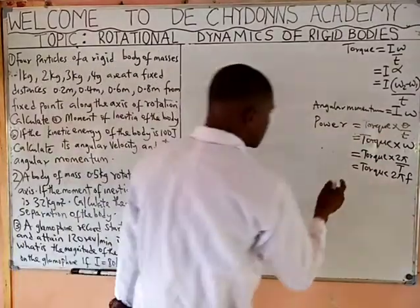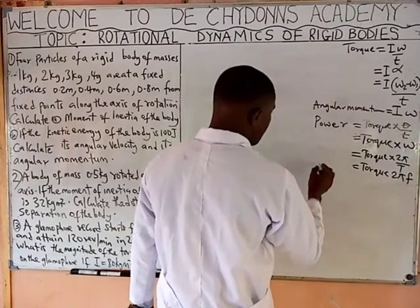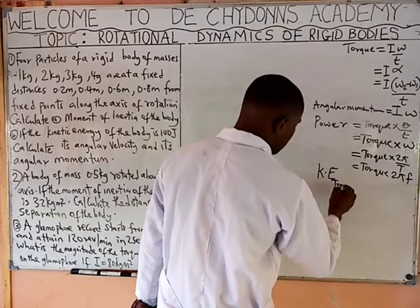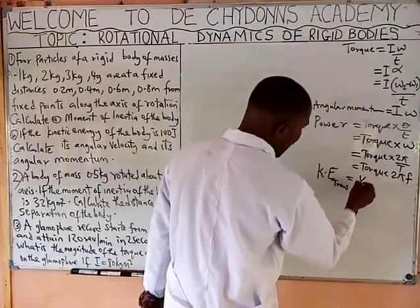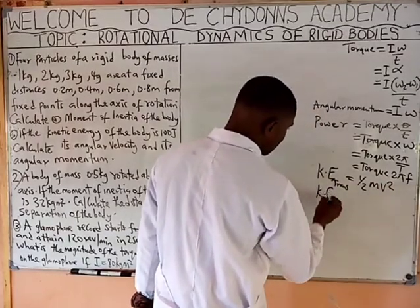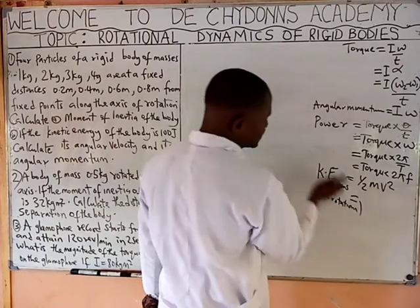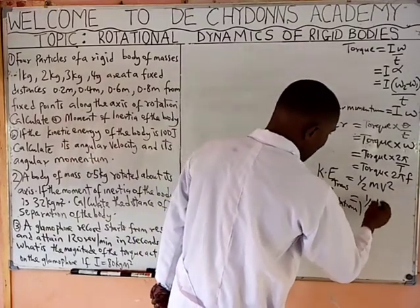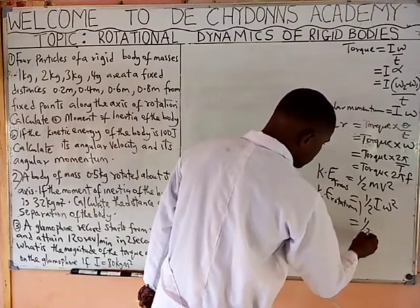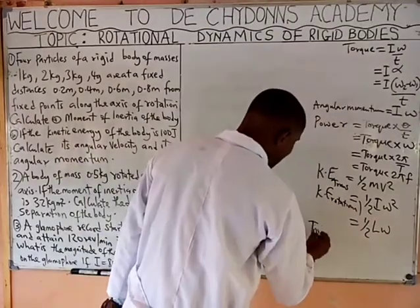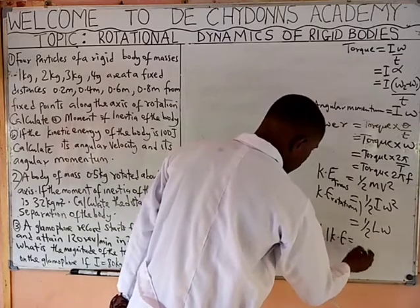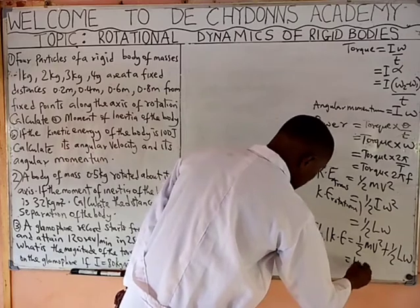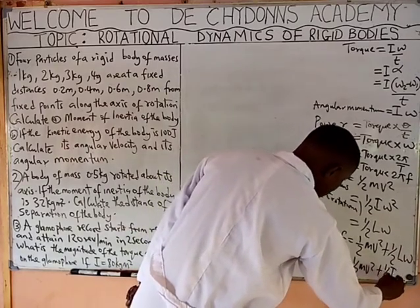Then write the formula for kinetic energy. Kinetic energy for translation is equal to half mv squared. Kinetic energy for rotation is different — it is one over two Iω squared, and is also equal to one over two L·ω. The total kinetic energy is equal to one over two mv squared plus one over two Iω squared.